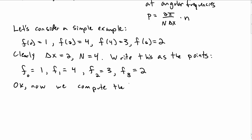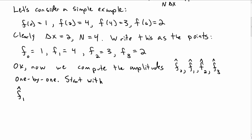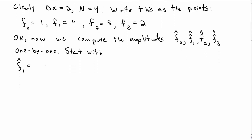Alright, so now we can compute the amplitudes, the f hat sub 0, f hat sub 1, f hat sub 2, and f hat sub 3, and we can do this one by one. So let's just start with f hat sub 1. Taking our expression above, this means we compute the sum r equal to 0 to 3, f sub r e to the minus i 2 pi over 4 times 1 times r.